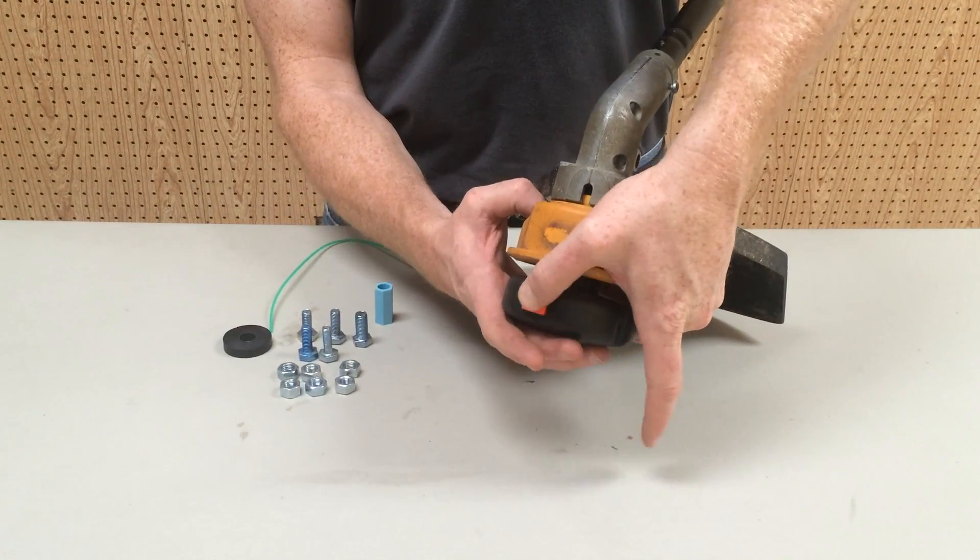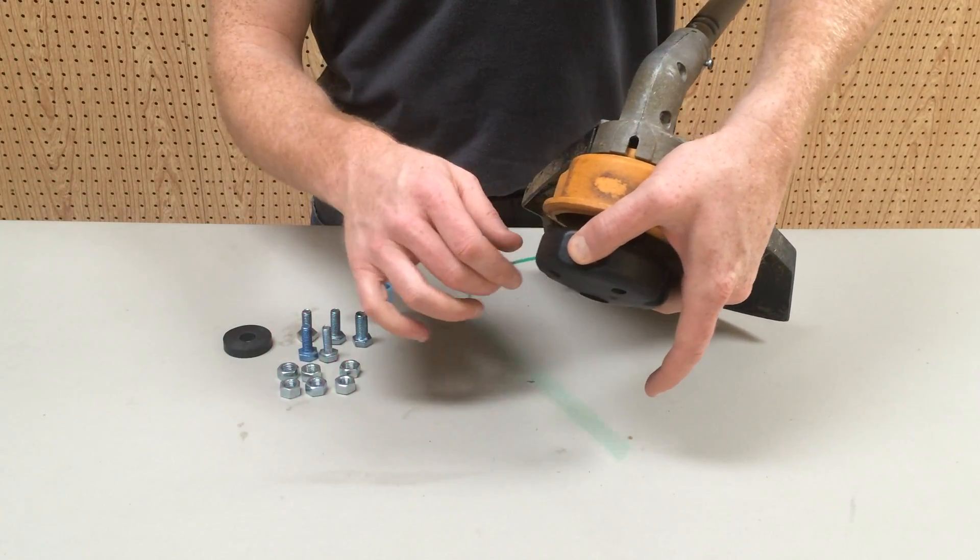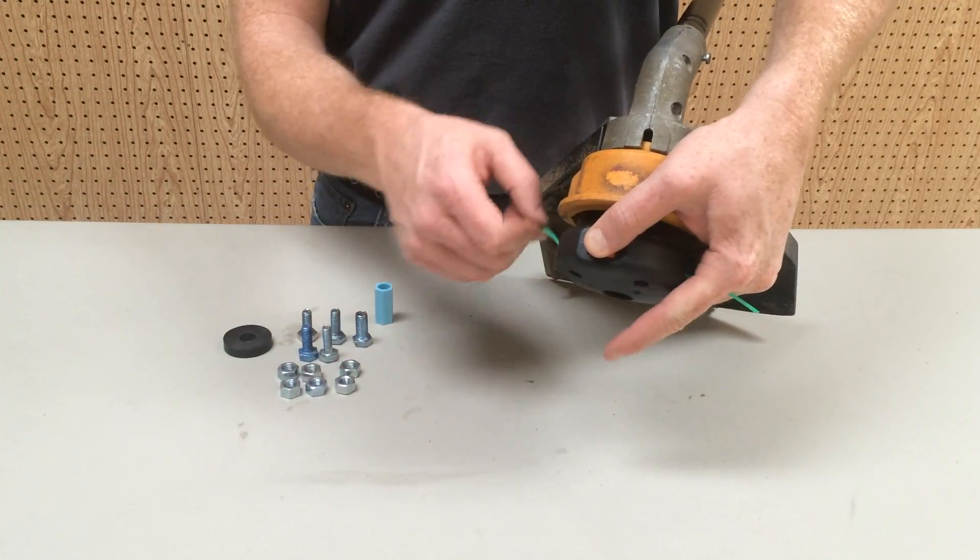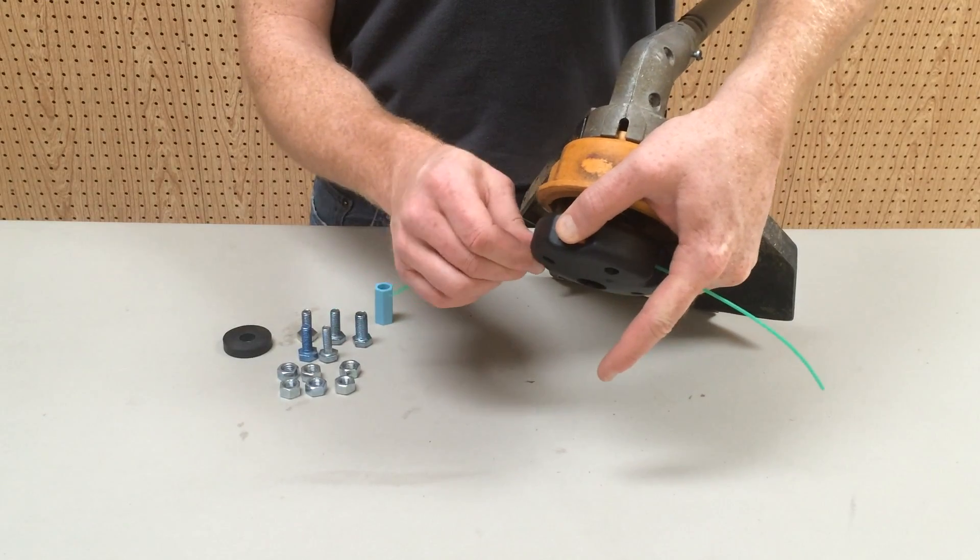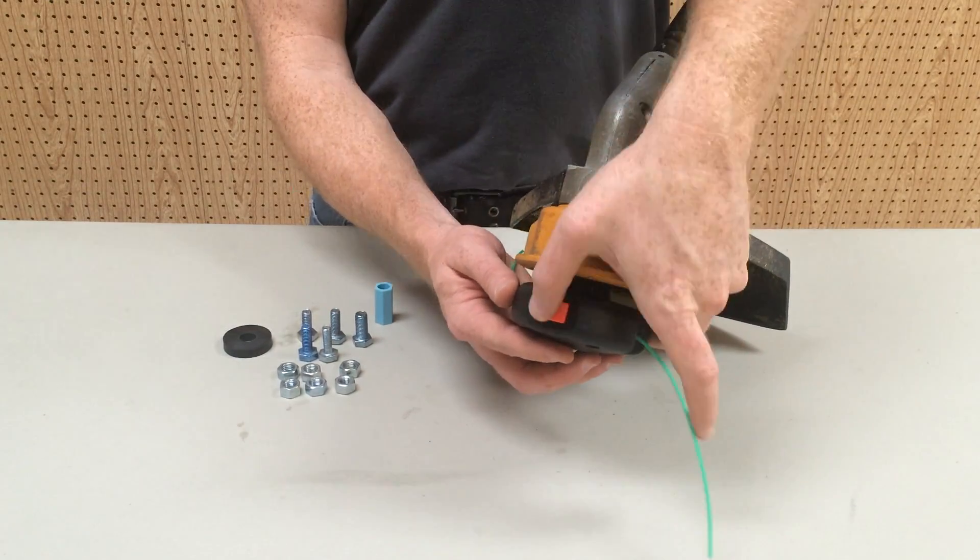To load the trimmer line, insert the line into the eyelet. Push the button and feed the line through the head. Pull the line through the other side so that there is an equal amount of line on either side.